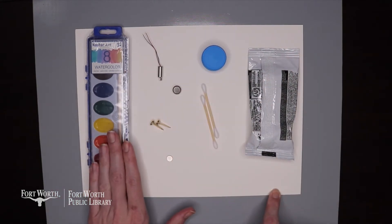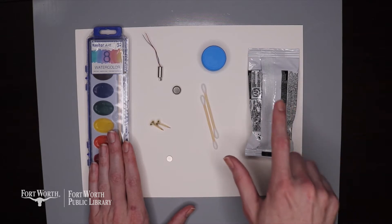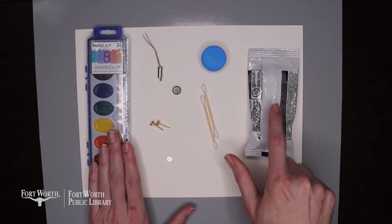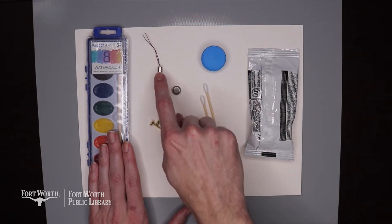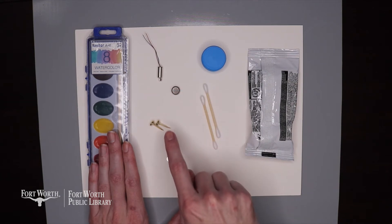you'll have some watercolors, you'll have some modeling material, you'll have a bottle cap, two cotton swabs, a vibrating motor, a button battery, two metal brads, and a magnet.